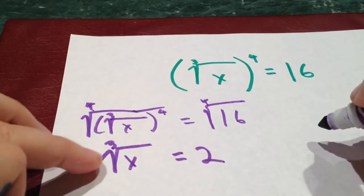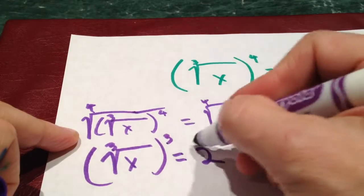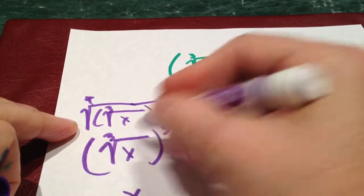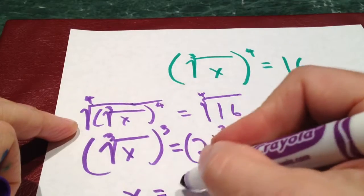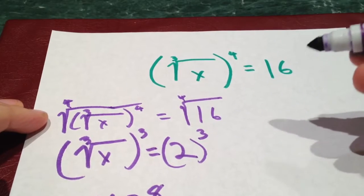The inverse operation of root 3 is to raise it to the third power. Those inverse operations cancel each other out, and I end up with 8, which most people can kind of reason out. Many of my students can.